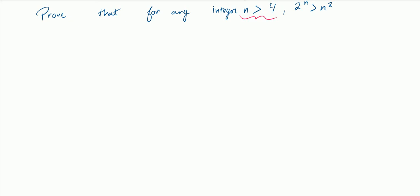In this example of a proof by induction, I'll be proving that for any integer n greater than 4, 2 to the n is greater than n squared. This is going to be my statement P(n).